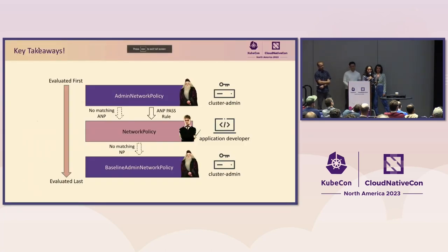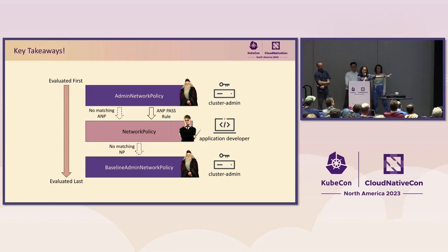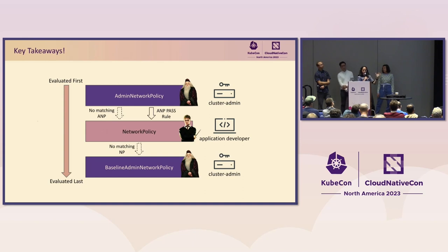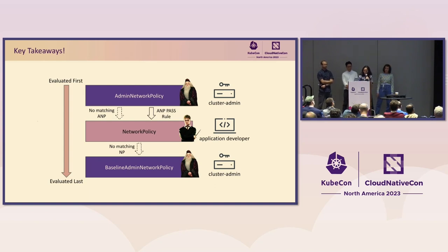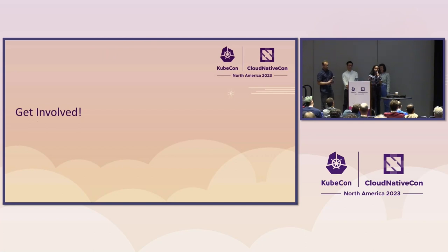The key takeaways: if you are a cluster admin persona, check out the Admin Network Policy and Baseline Admin Network Policy resources. If you define ANPs, you can use the pass action to interact with your network policies or with your baseline admin network policies if there are no matching network policies. If you have no admin network policies and no network policies, you can still fall down to your baseline admin network policies. These are the three layers to keep in mind.